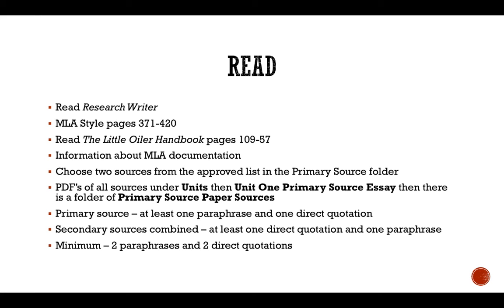Keep in mind when you go to write your primary source essay, you are looking for at least one paraphrase and one direct quotation from your primary source, and then from at least two secondary sources combined, you're looking for at least one direct quotation and one paraphrase. So overall in the entire primary source essay, a minimum of two paraphrases and two direct quotations are required.